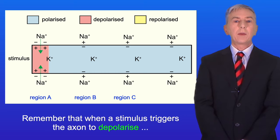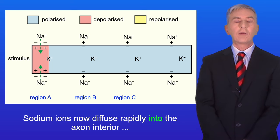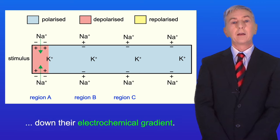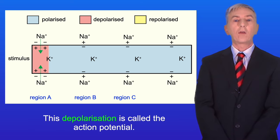Remember that when a stimulus triggers the axon to depolarize, voltage-gated sodium ion channels open. Sodium ions now diffuse rapidly into the axon interior down their electrochemical gradient. This causes the charge in the axon to switch from negative to positive and this depolarization is called the action potential.